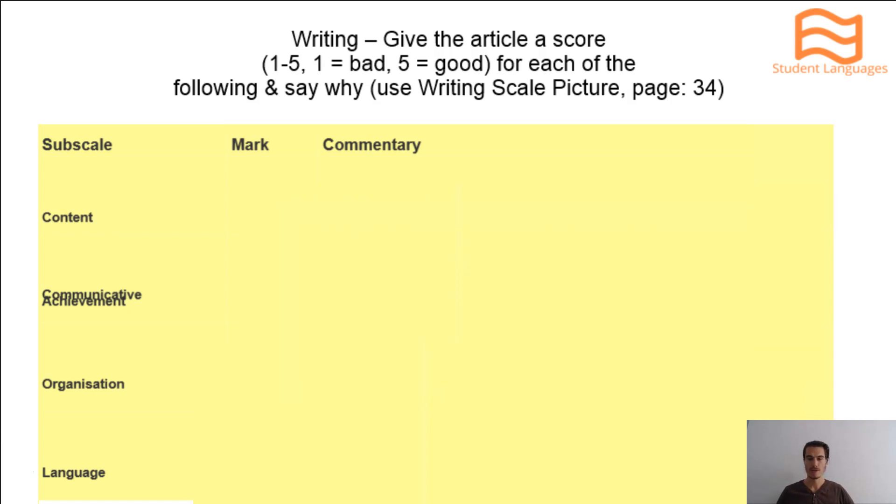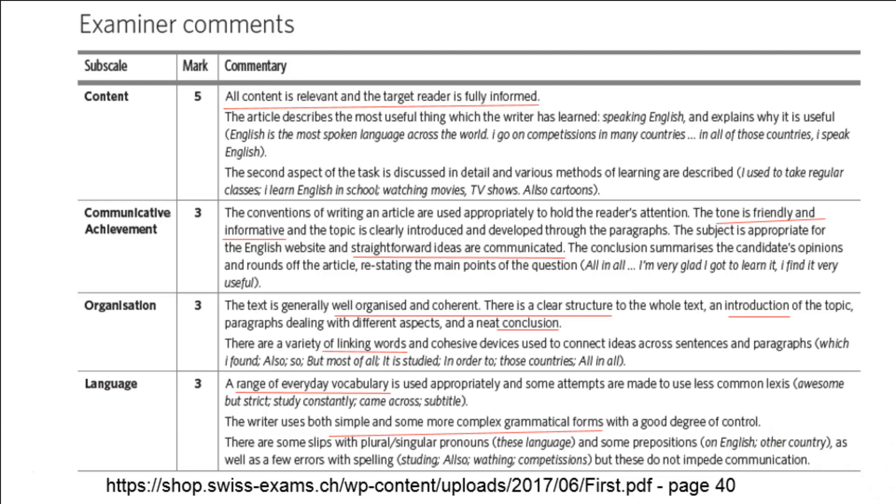Okay, so hopefully you've done that. Now we are going to look at what a real examiner said about this article. As you can see, he said at the top, all content is relevant and the target reader is fully informed and he's given that a five, which is top marks for content. Communicative achievement, organisation and language are all three, so all in the middle.